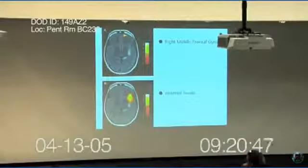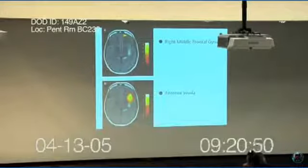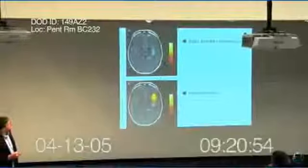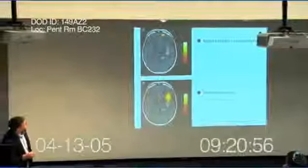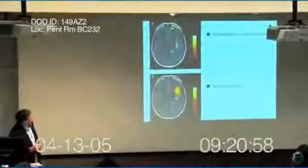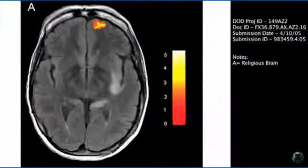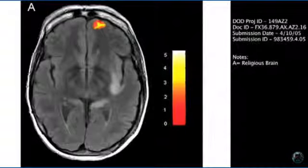In each case, these individuals were read a religious text. This individual lit up the right middle frontal gyrus shown here, and that's a part of the brain that's associated with theory of mind. It's a part of the brain that has to do with intents and beliefs and desires.